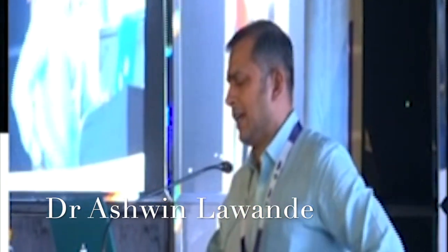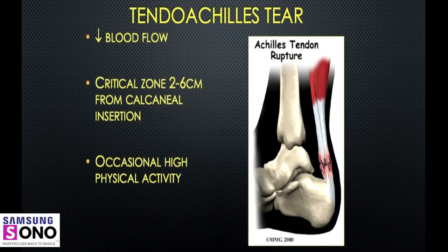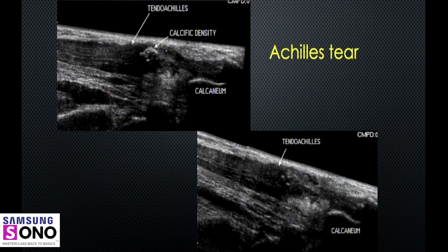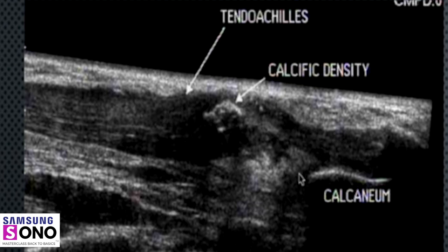For tendon tears, the tendon commonly tears at the level around 2 to 6 centimeters above the insertion. Instead of a normal, nice thick fibrillar echo pattern, what you see on a frozen image is that the tendon is abnormally enlarged, there is a calcific density, then the tendon has thinned out. You may not know whether it's a partial or full tear, but you can definitely see that the tendon tissue has decreased, which alerts you that there is some amount of tear.